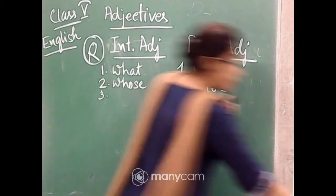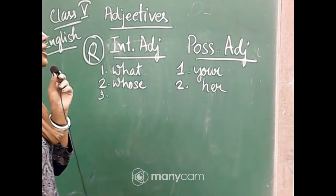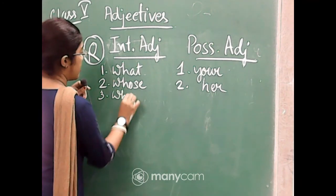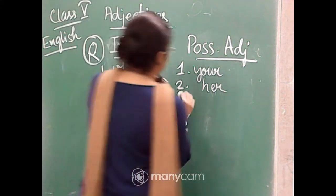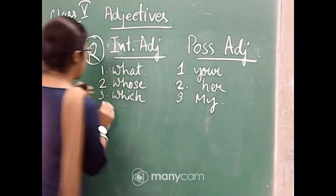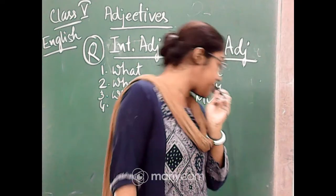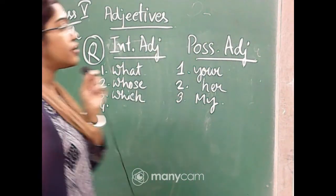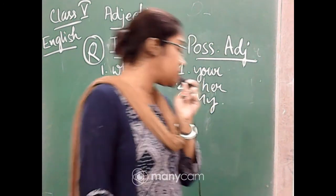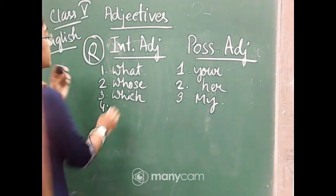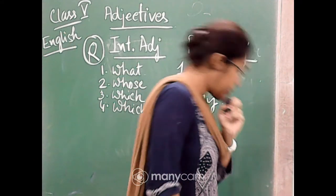Number three: 'Which boy needs my help?' — 'which' is the interrogative adjective, and 'my' is the possessive. Number four: 'Which tools does the carpenter need to start his work?' — 'which' is the interrogative adjective, and 'his' is the possessive.